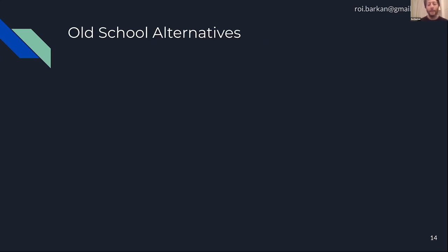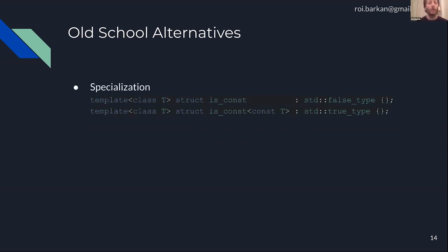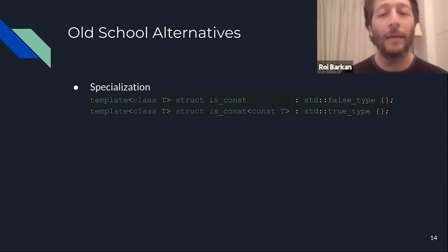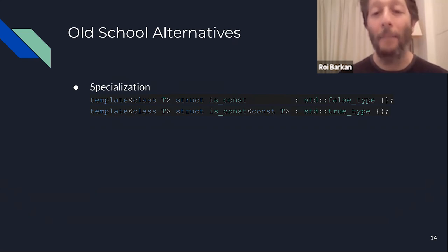There are also things used before C++20 that aren't really relevant for concepts — most notably specialization. Here's an example of a partial specialization where I convert every type that is const into true and every type that is not const into false. I use template specialization to create this mapping: is_const maps to either true or false based on whether T is constant or not.